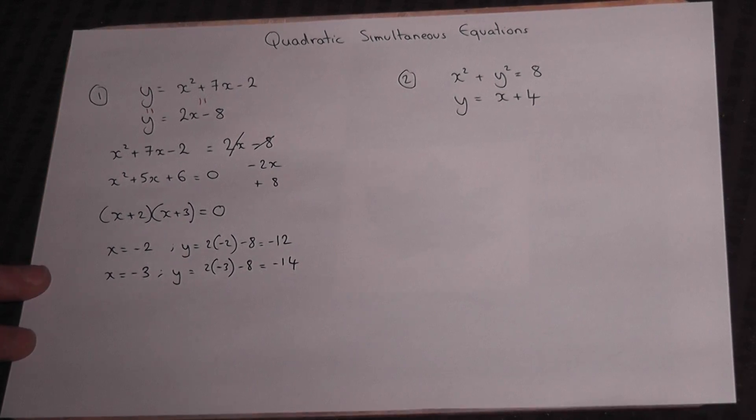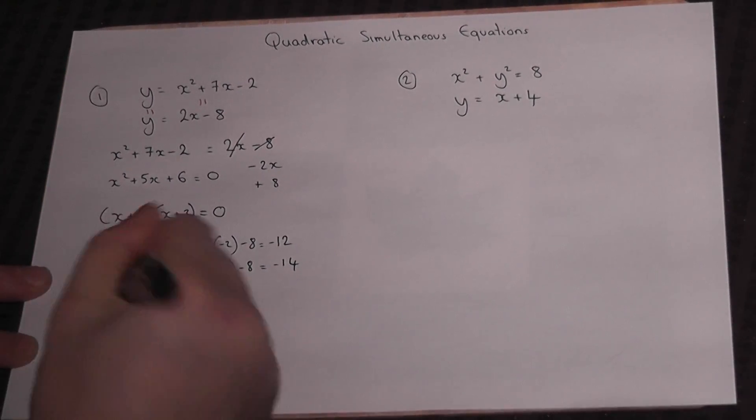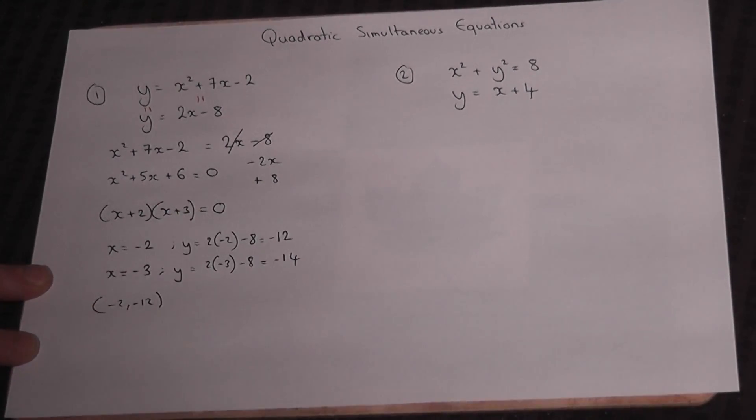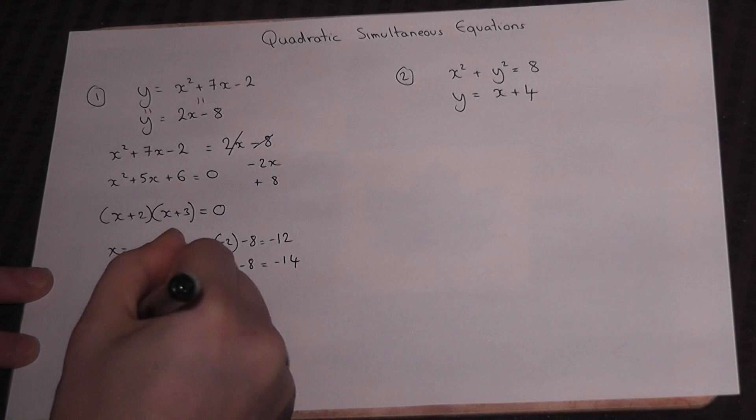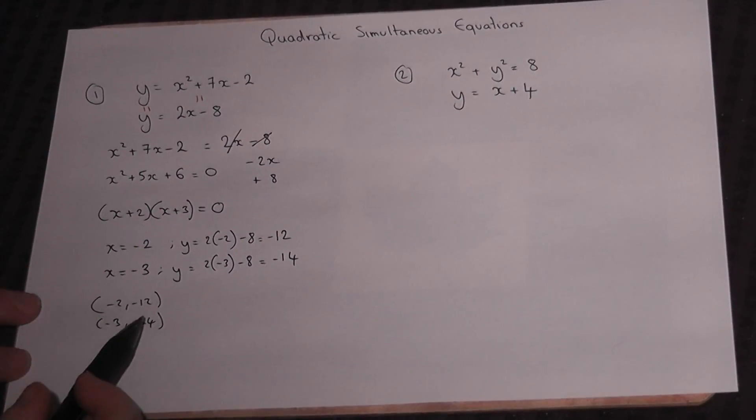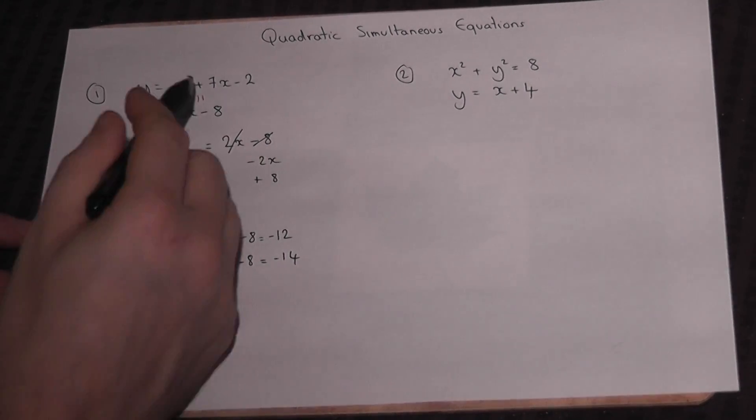And there are our answers, actually two sets of coordinates. The first coordinate is (-2, -12), the other coordinate is (-3, -14). So these values are the solutions to these two equations, and it's where the actual curves and lines intersect.